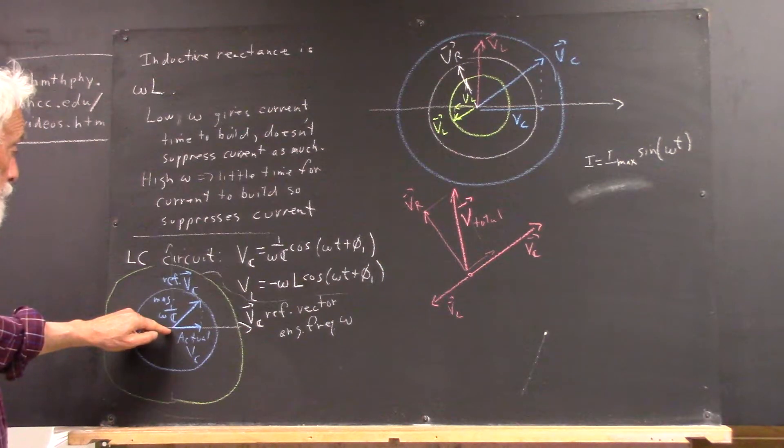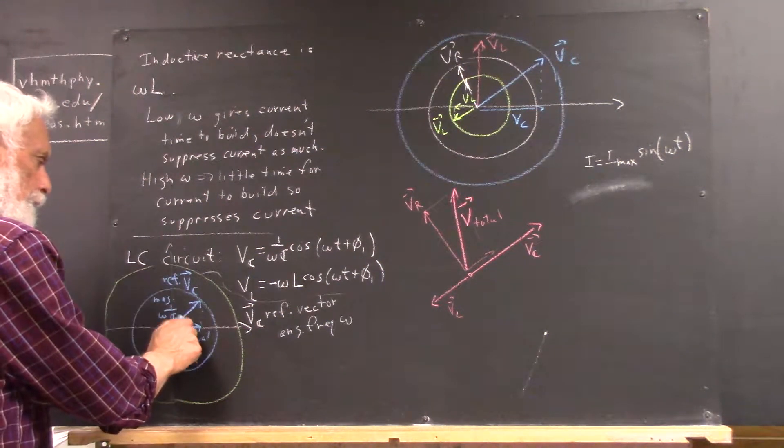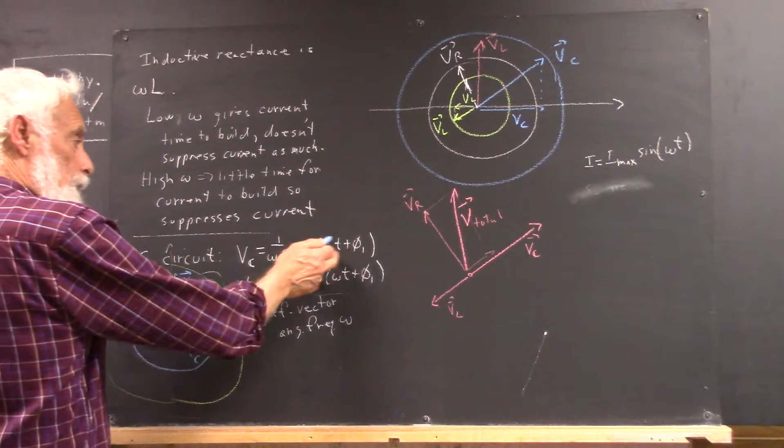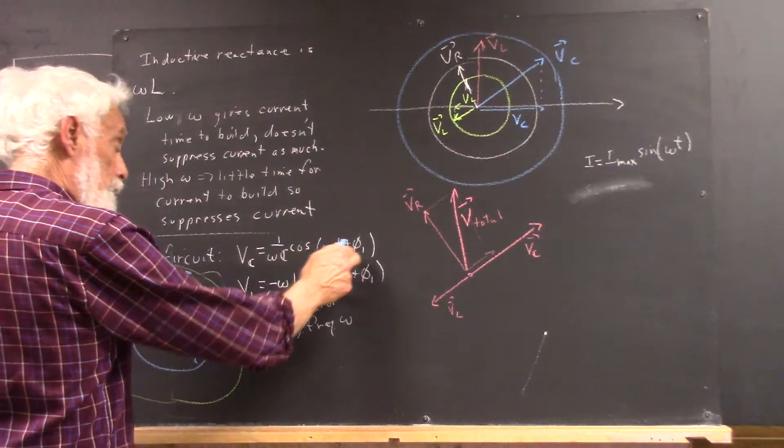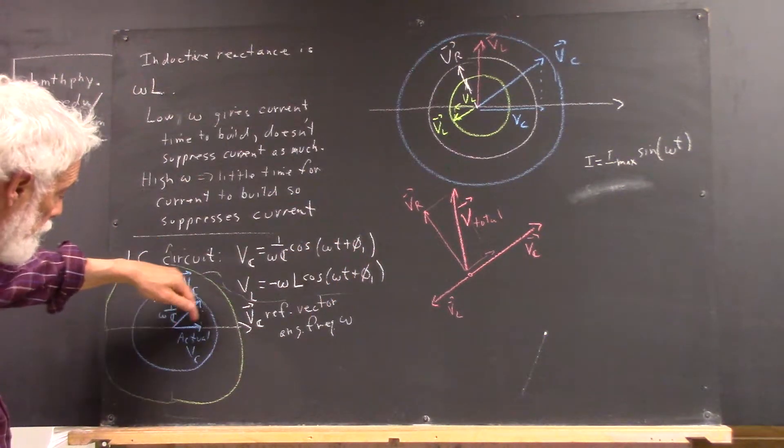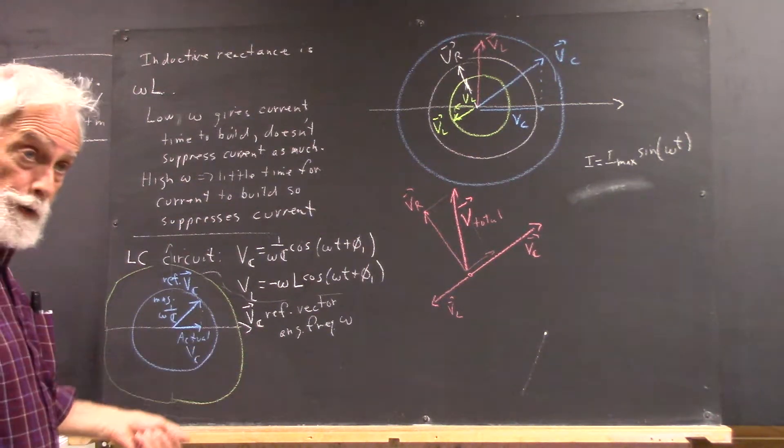Okay, the angle theta here implicitly is our omega t plus phi 1, so the cosine of omega t plus phi 1 is going to project this vector down here in a way that you should be familiar with from pre-calculus 2.